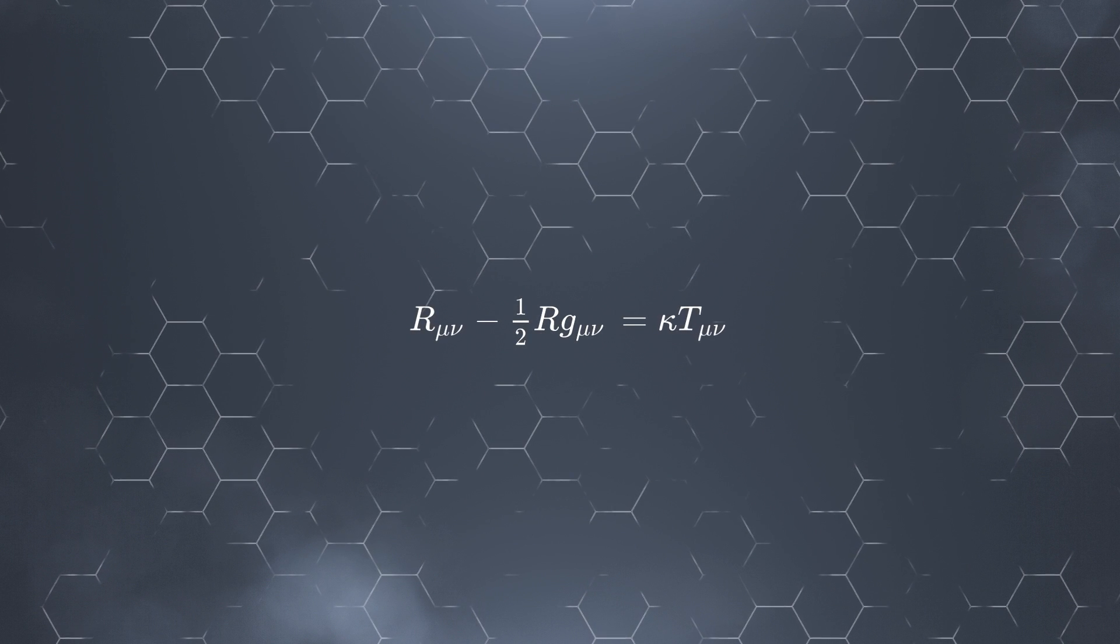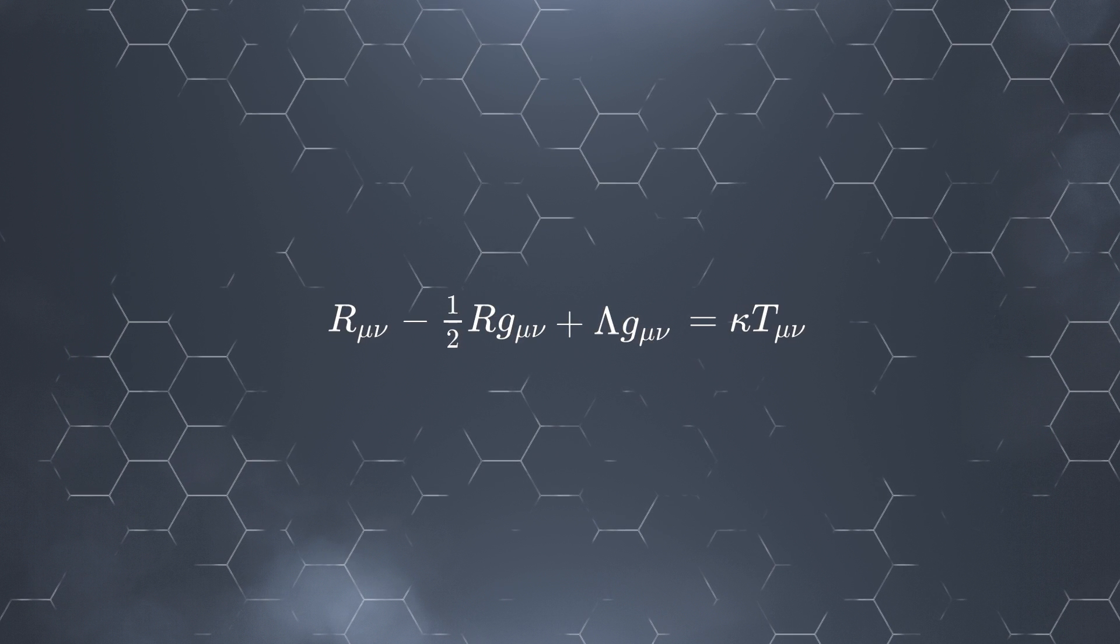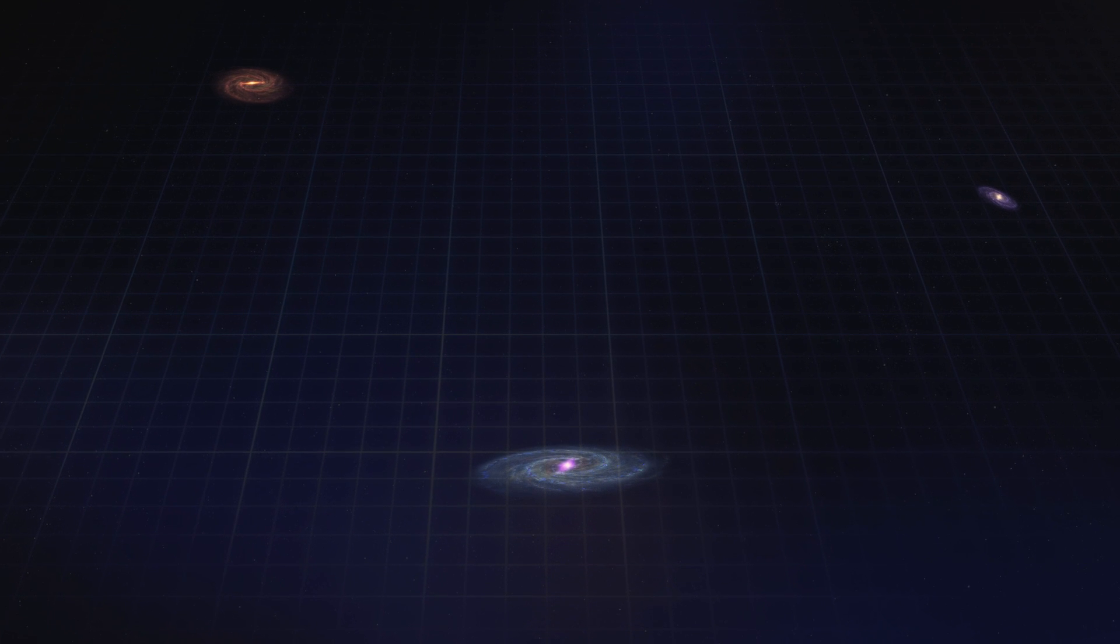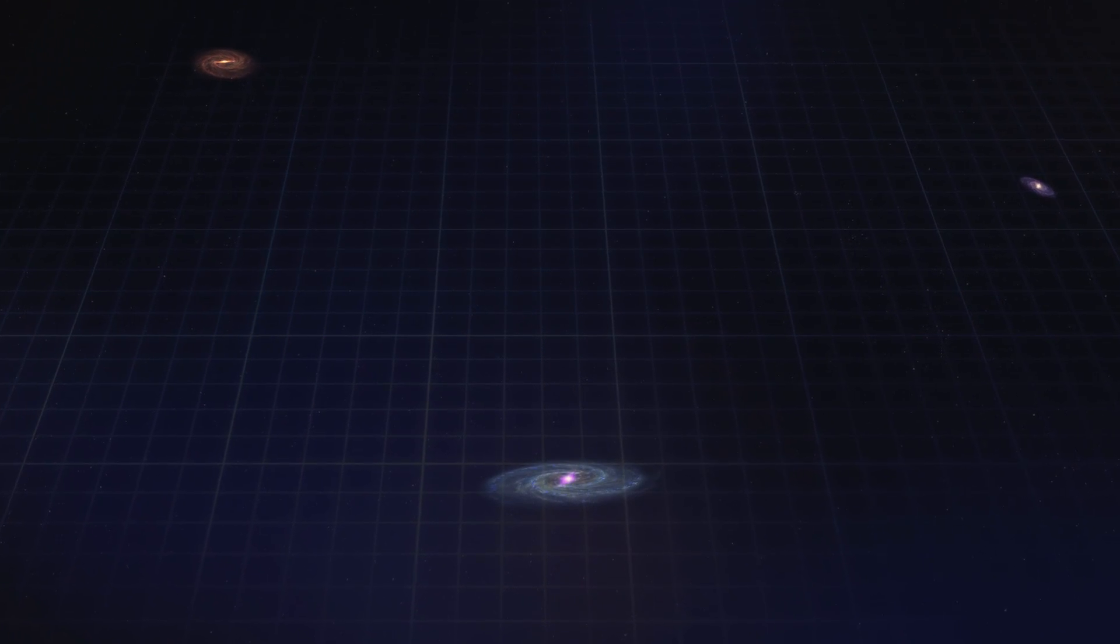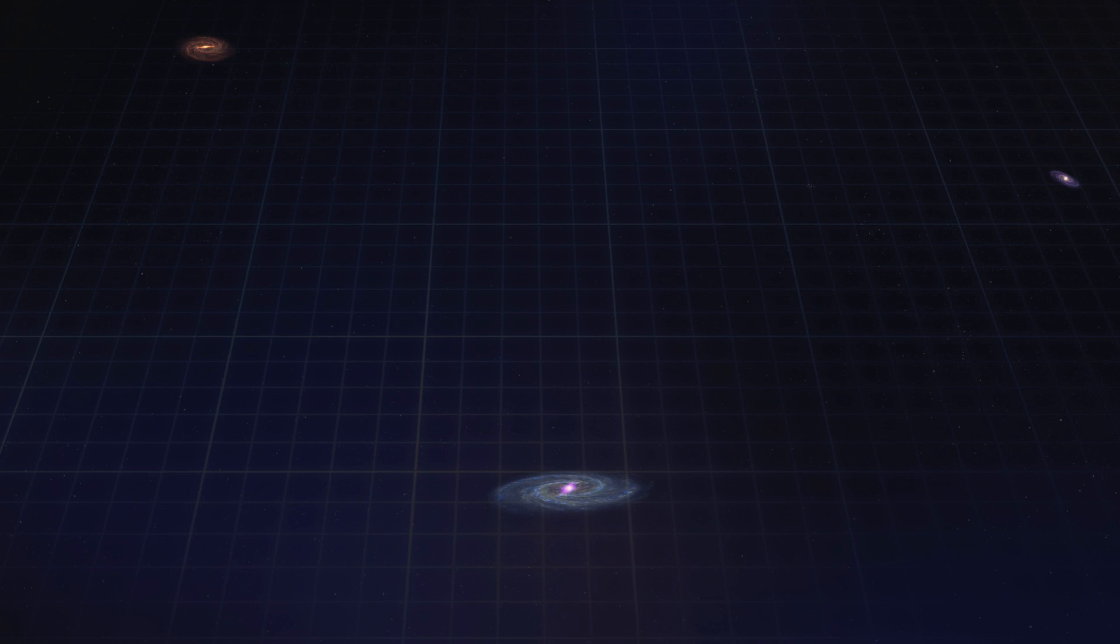Einstein's general theory of relativity predicted that the universe could not be static, as purely attractive gravitational force would cause all matter to collapse on itself. This bothered Einstein so much that he tried fixing his theory by adding a simple constant, also called the cosmological constant, that would act opposite to gravity and would cause space to expand. If the cosmological constant would exactly counteract gravity, he could explain why the universe is static.